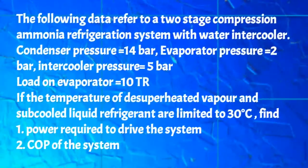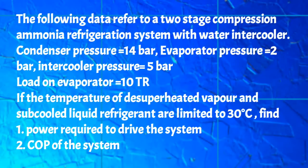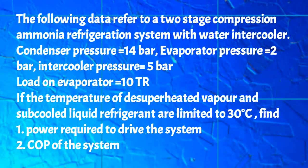First I will read the given problem. The following data refers to a two stage compression ammonia refrigerating system with water intercooler: condenser pressure 14 bar, evaporator pressure 2 bar, intercooler pressure 5 bar, load on the evaporator 10 TR. The temperature of desuperheated vapor and subcooled liquid refrigerant are limited to 30 degree Celsius.